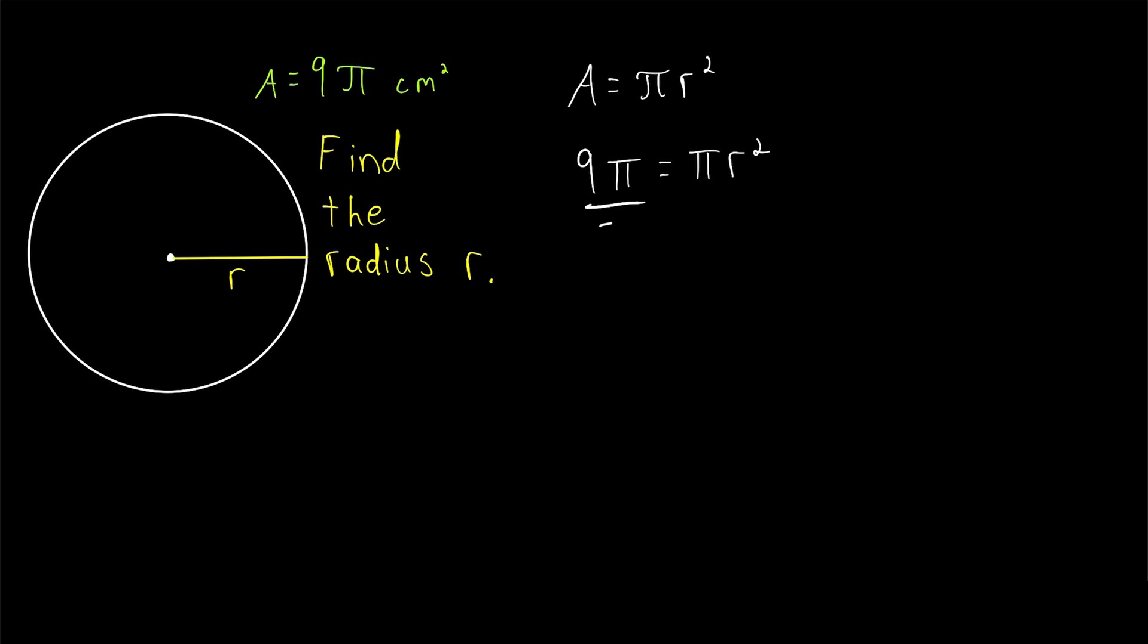To get R by itself, we can begin by dividing both sides of the equation by π. That will cancel out this π on the left, so we'll have 9 equals the radius squared. Then just take the square root of both sides to solve for the radius.